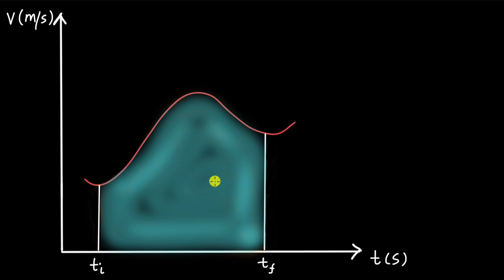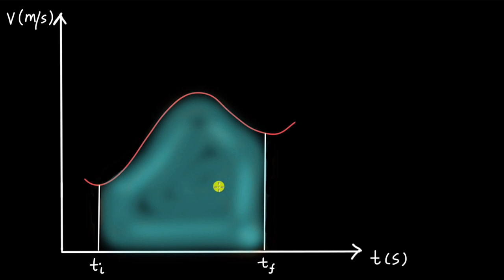We can get better and better approximations for it. One way of doing that is to divide this area into sections of delta T's. It does not matter if you make equal sections or sections of different width. Let's say we divide this into 10 sections of equal width.